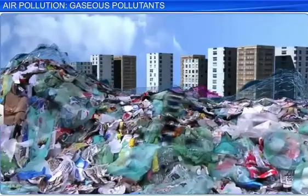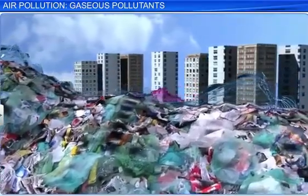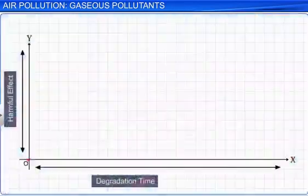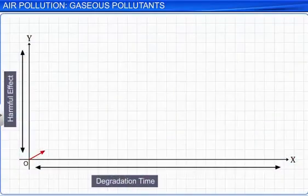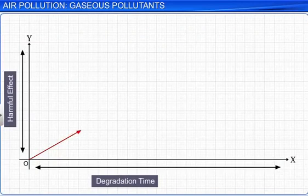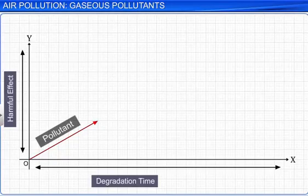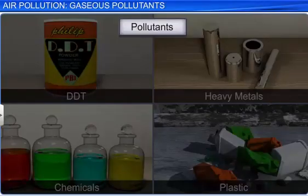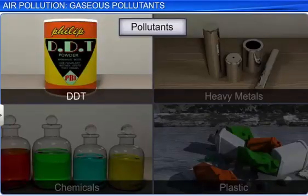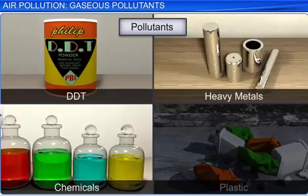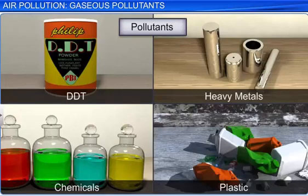How will waste products discarded by humans degenerate in nature? When the rate of degradation is slow, its potential of harm increases. Sometimes, the rate of natural degradation is so slow that the pollutant can cause harm for years and years. Dichlorodiphenyl trichloroethane, commonly called DDT, heavy metals, many chemicals and plastic are among such pollutants.